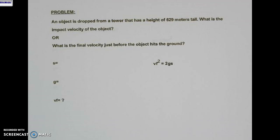So in this case, we've got to find S. So do we have a height or a distance? Yes, we have a height or a distance. So we're going to put down 629 meters. G again is 9.8 meters per second squared.